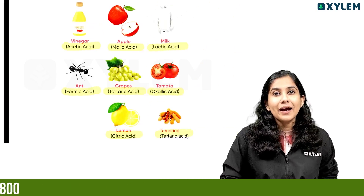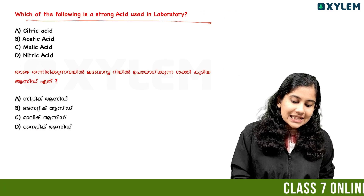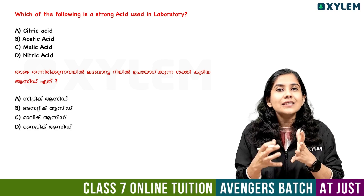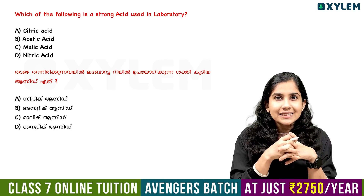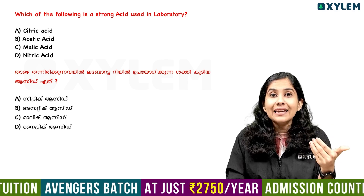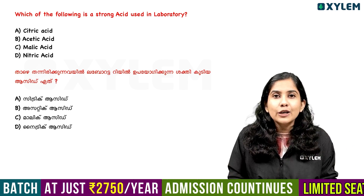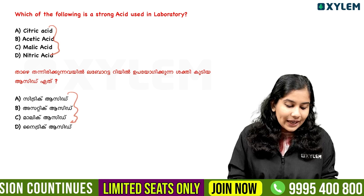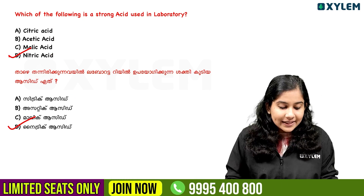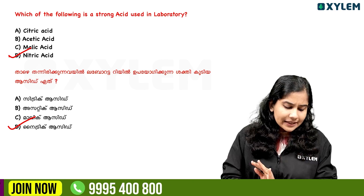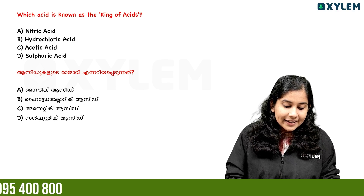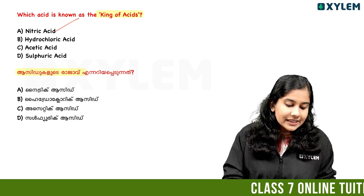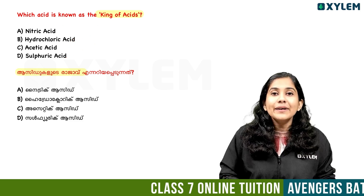Which of the following is a strong acid used in the laboratory? Acetic acid and citric acid are weak acids. The strong acids include nitric acid, hydrochloric acid, and sulfuric acid. Sulfuric acid is known as the king of acids.